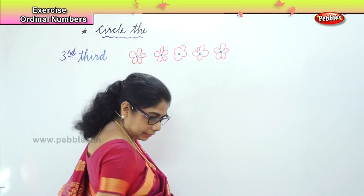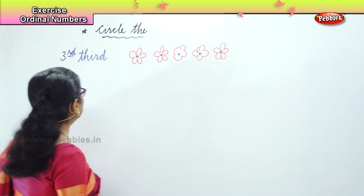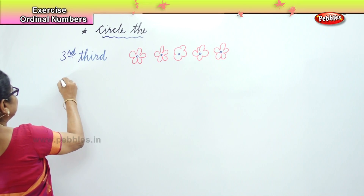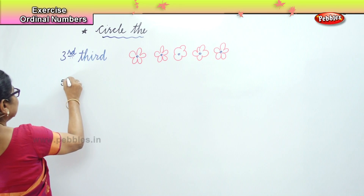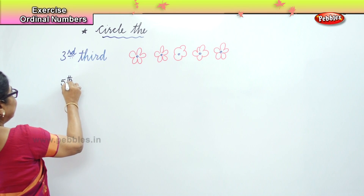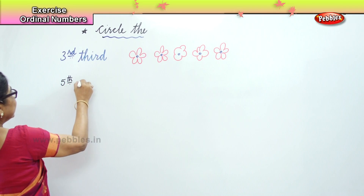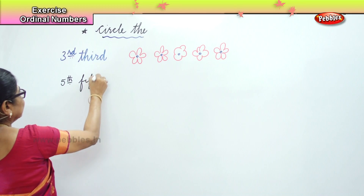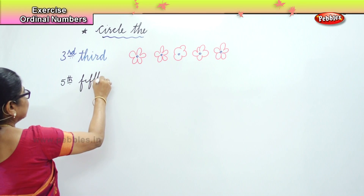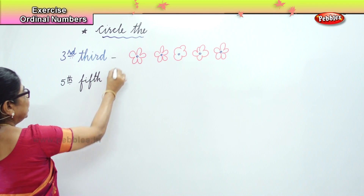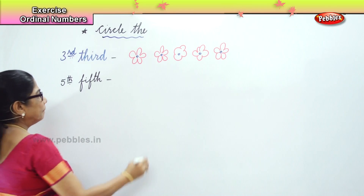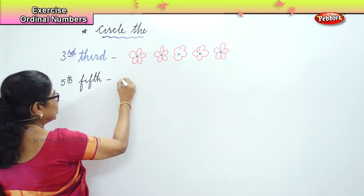Next. Here — fifth. You are going to circle the fifth mouse, okay?